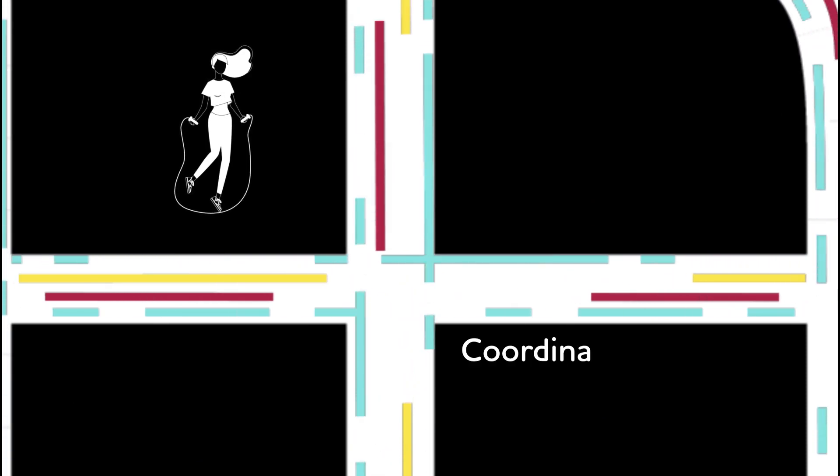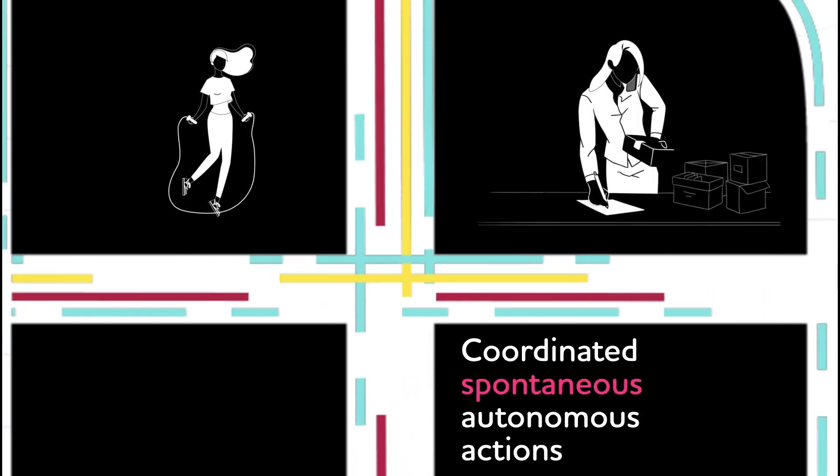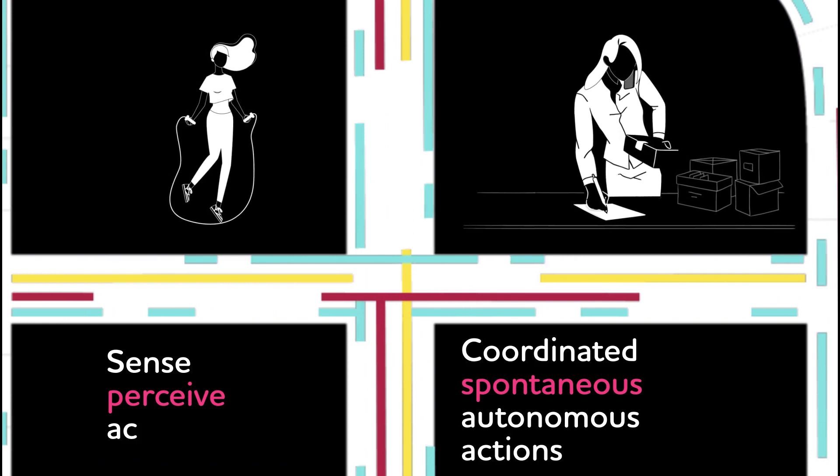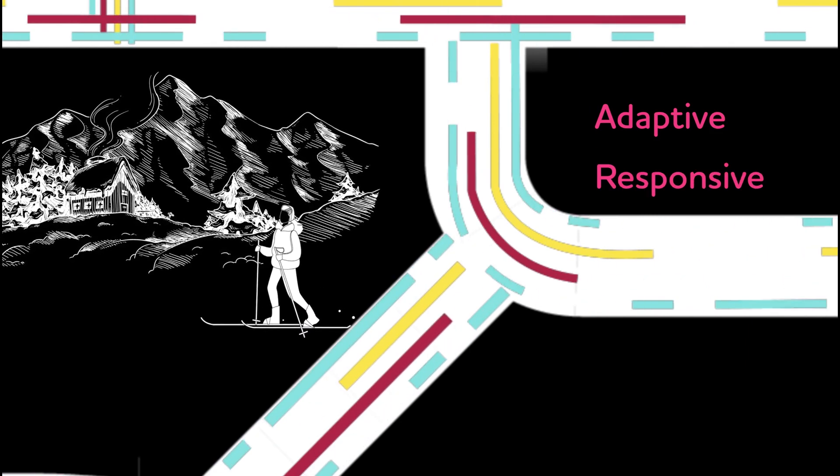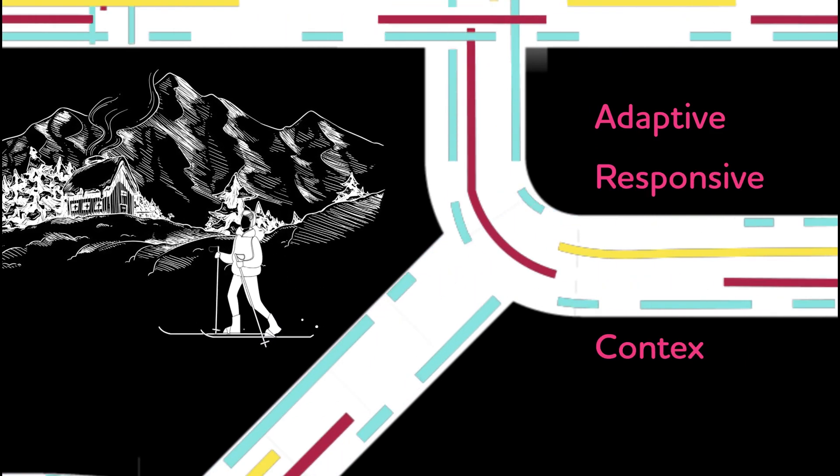Because of the neural system, a human being can continuously sense, perceive, act, be adaptive to changing environments, respond to external stimuli, and always be aware of the context.